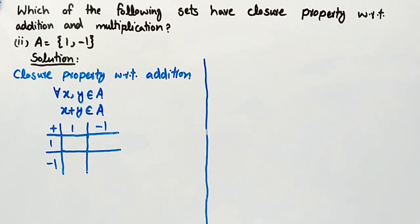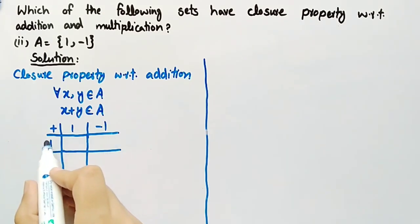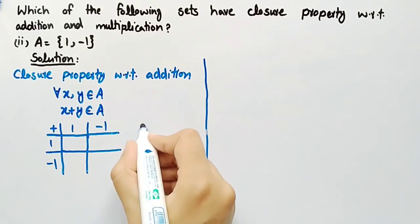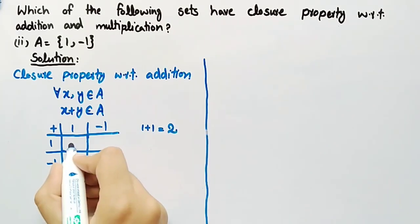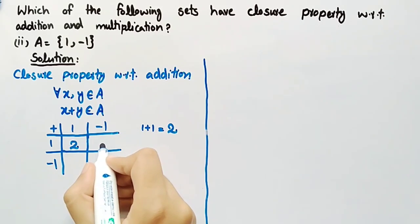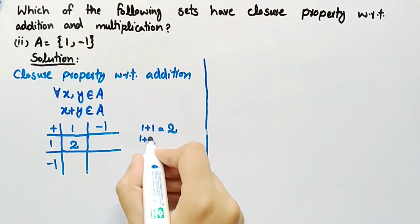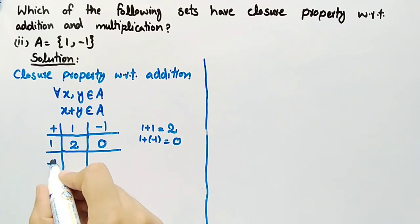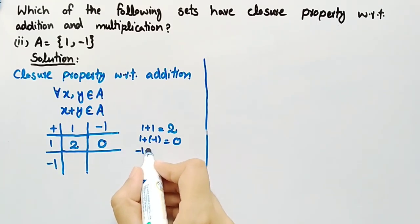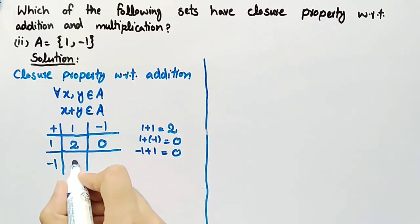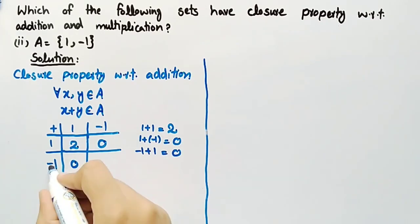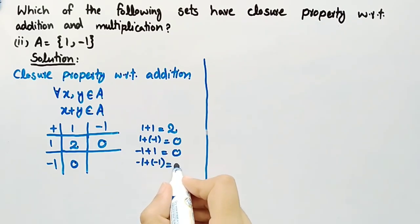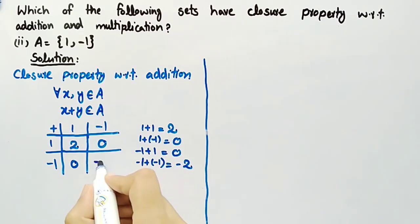Now we will construct a table in which we will add each element of set A one by one with each other element. We have written all elements of set A in the first row and first column. Here 1 + 1 = 2, so we write 2. Here 1 + (-1) = 0, so we write 0. Here (-1) + 1 = 0, so we write 0. And (-1) + (-1) = -2, so we write -2.